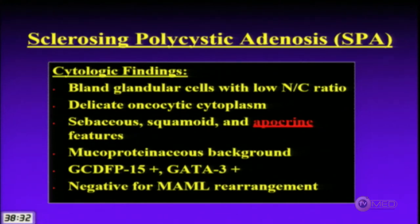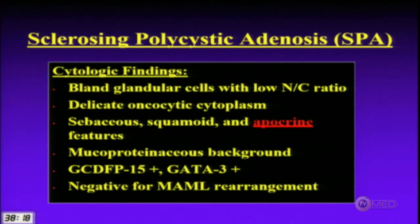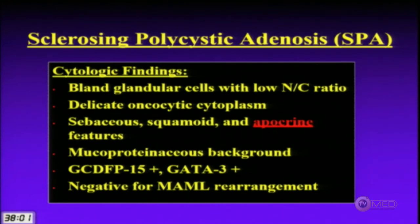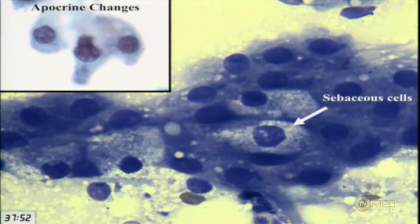On cytology, a specific diagnosis of SPA is unlikely on FNA — it will fall into the SUMP low-grade category. The key combination is sebaceous cells, squamoid or epidermoid cells, and that unusual apocrine change. There may be a proteinaceous or mucoproteinaceous background. Lesions are usually positive for GATA3 and GCDFP, and negative for MAML2 rearrangement on molecular studies.